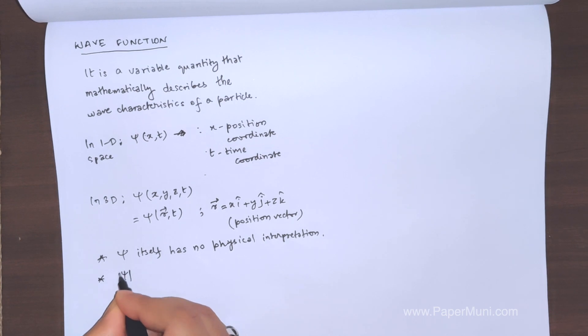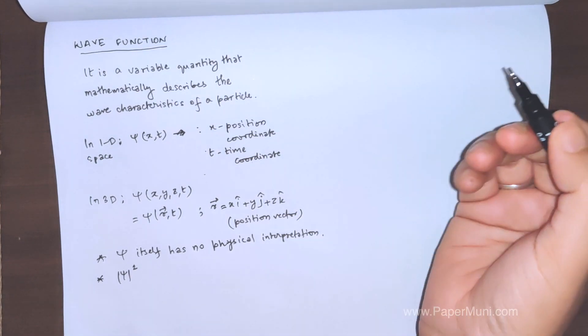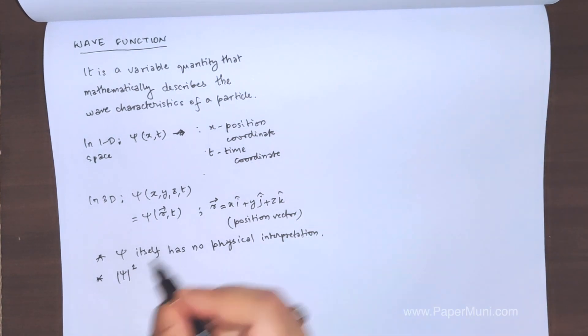The next point is the Born interpretation. Now somebody says okay, fine, we got the psi, now what to do with it? So what we do is Born gave an interpretation, a statistical interpretation, saying that the psi can be negative as well as positive, or wave function can be negative as well as positive.